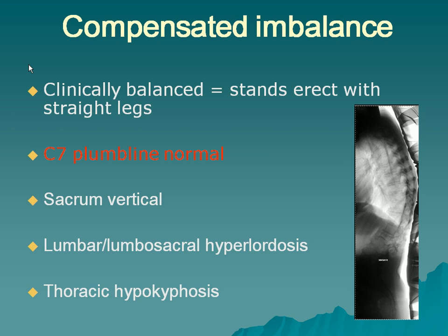With compensated imbalance, the patient stands erect with straight legs and a normal C7 plumb line — you may say this is a balanced patient. But it may not be: they may have a vertical sacrum, lumbosacral hyperlordosis, and thoracic hypokyphosis — they are compensating. You must not fuse this patient in the position they are in. You have to increase the lordosis, because if you don't, you fix the patient in a kyphotic deformity and actually make them worse. This is why many of these patients are made worse by surgery.